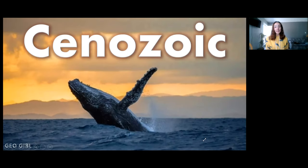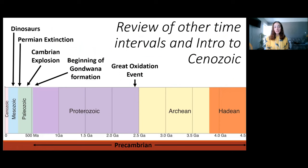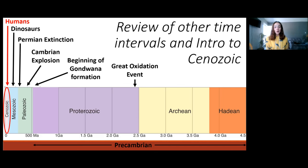Today we're going to be going over the Cenozoic era. Like all the other time interval lectures we've done, I start by showing you this timeline to remind you where we're at now in geologic history. We started with the Precambrian, which goes from the Hadean to the Archean to the Proterozoic, then the Paleozoic era, then the Mesozoic, and now we're finally at the Cenozoic era. This is the most recent era in Earth's history and is still going on right now, and that is why I put humans as the main event for this era. There are a lot of other things that went on during this era early on and are still going on now, and we're going to go over some major geologic and biological events that occurred in the Cenozoic.